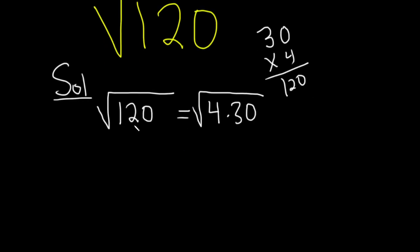And then we can break this up as the square root of 4 times the square root of 30.